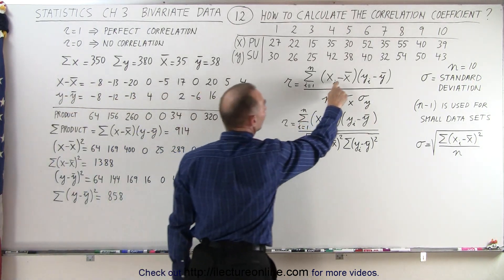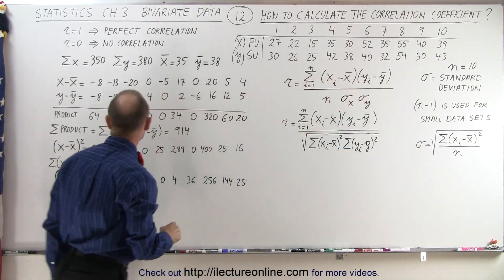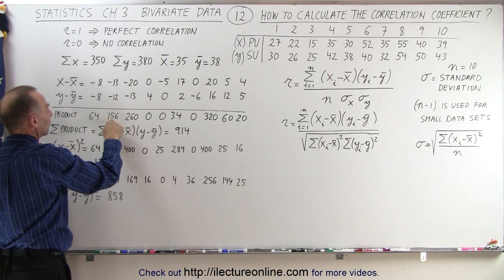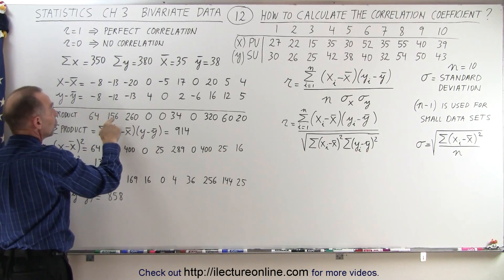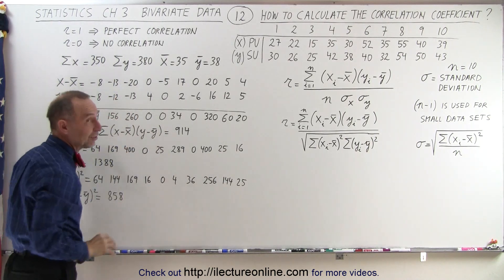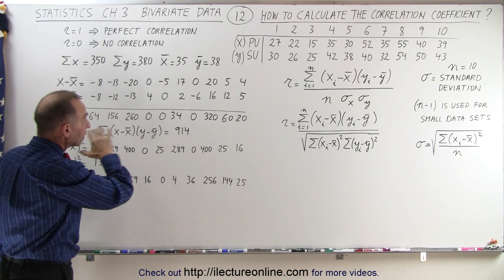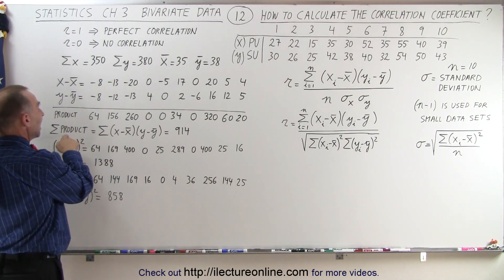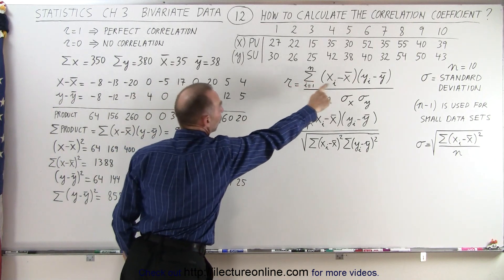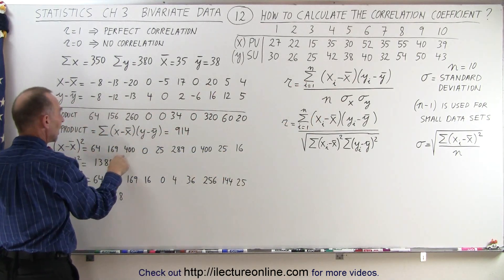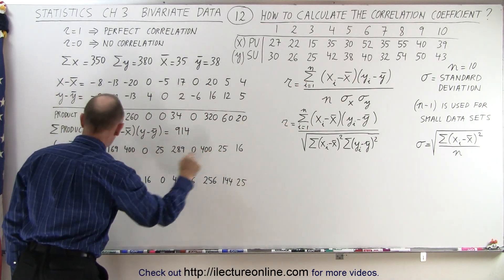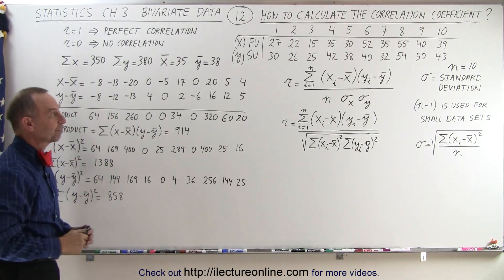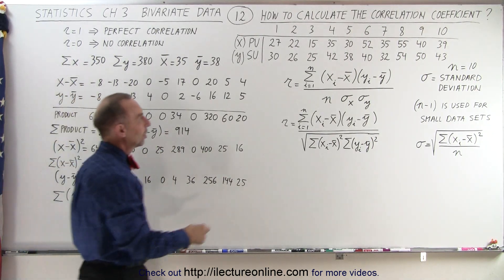Then we multiply the x-differences and y-differences together: multiplying the first pair gives 64, the second pair gives 156, and so on. Notice we keep track of positive and negative signs, but in this case they all end up being positive. We then sum all the products together and get 1388.